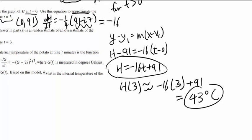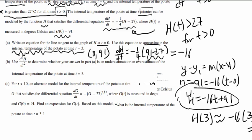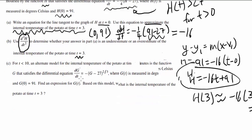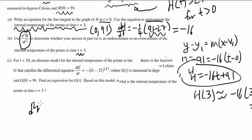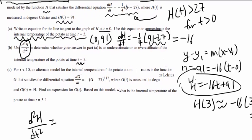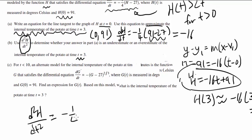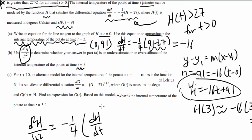Now let's go on to part b. Use second derivative of h with respect to time to determine whether your answer in part a is underestimate or overestimate of the internal temperature of the potato at t equals 3. So let's start by finding d²h/dt². How do you find it? You know dh/dt is negative one fourth h minus 27. So let's just simply differentiate that. So you got negative one fourth and you're going to differentiate h with respect to t. And differentiating negative 27 gets us 0.